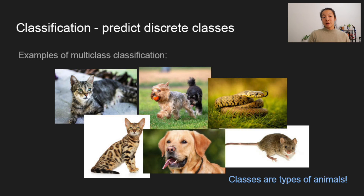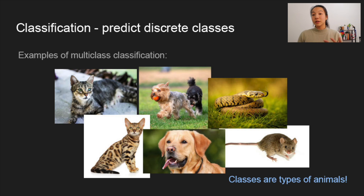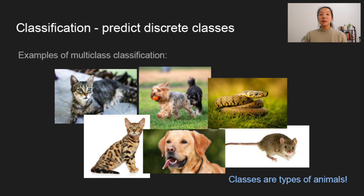Another example of multi-class classification might be a bunch of different images of cats, dogs, fish, and all different types of pets — and we want our model to look at these images and tell us which class it fits under: is it a cat, dog, fish, hamster, etc.? What that means is there are many different types of classes and we're trying to figure out which one the input belongs to.